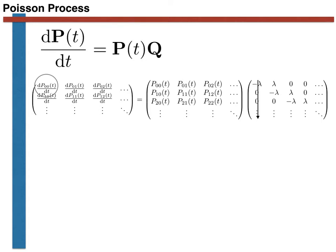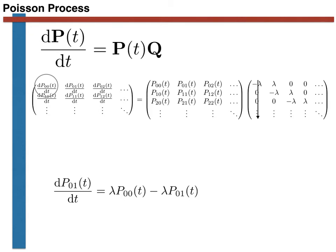Let's now repeat this process to get an expression for dp01(t)/dt. Remember that p01(t) is the probability that only one event has occurred by time t. Because dp01(t)/dt appears in the 0,1 element of the matrix of derivatives, we get this value by multiplying the first row of the matrix of probabilities by the second column of q. There are only two non-zero elements of q in this column, so the matrix product has only two terms as shown in the second differential equation on the slide. It turns out these are the only two kinds of differential equations that arise from this matrix multiplication.